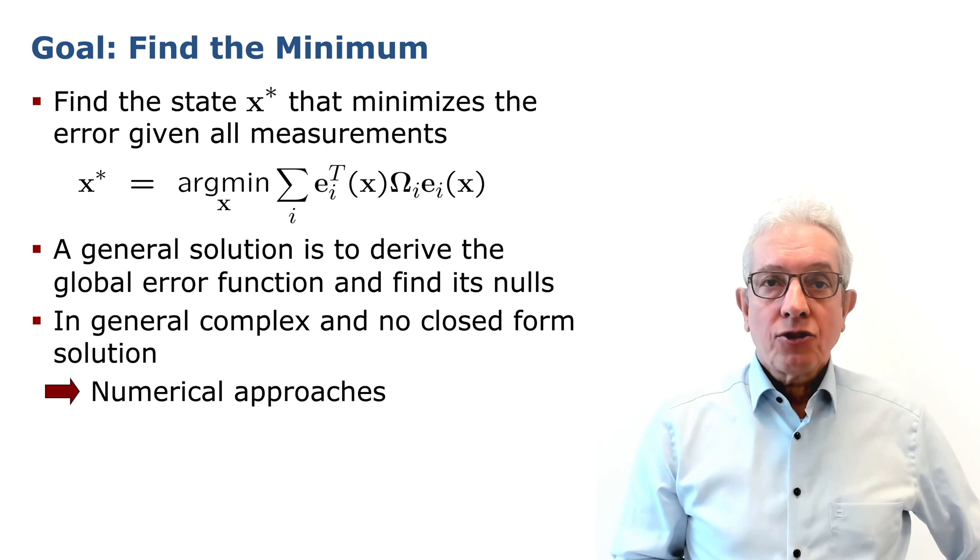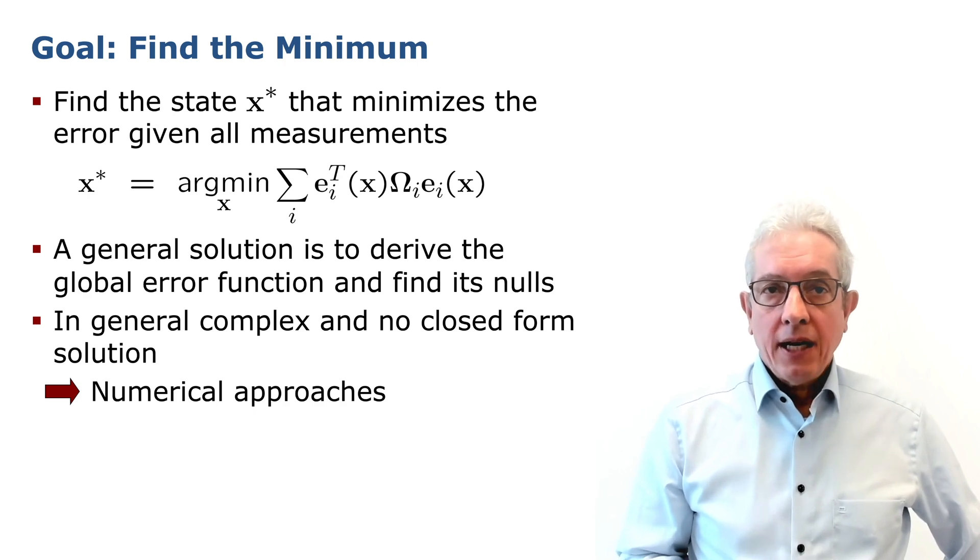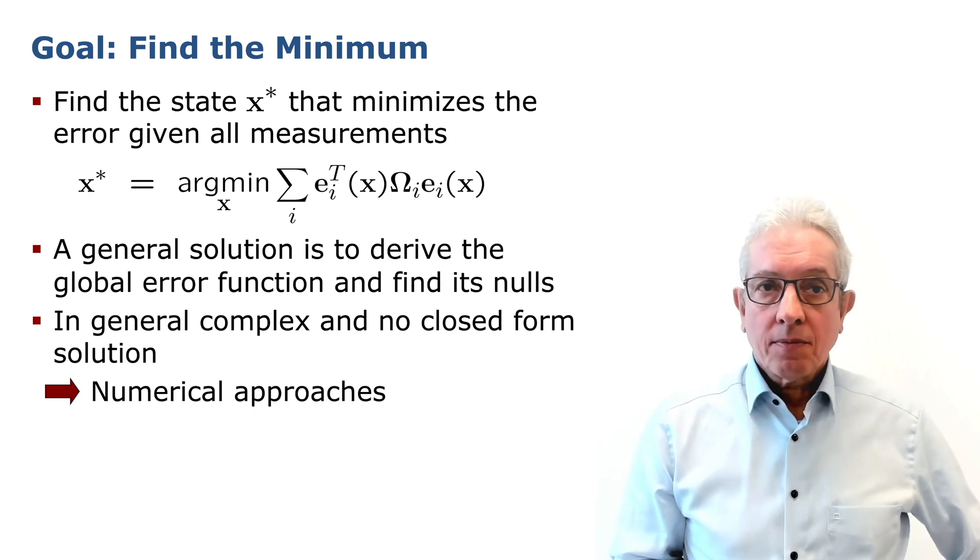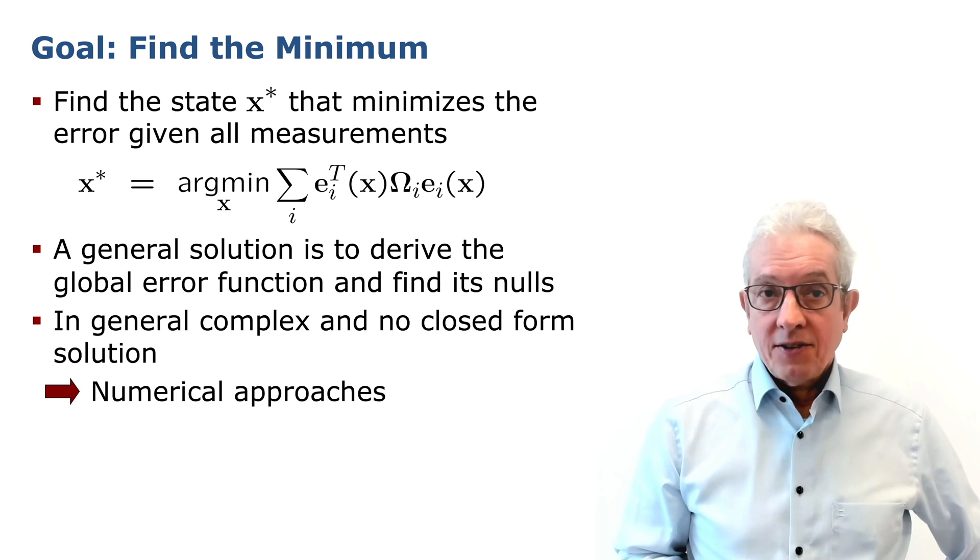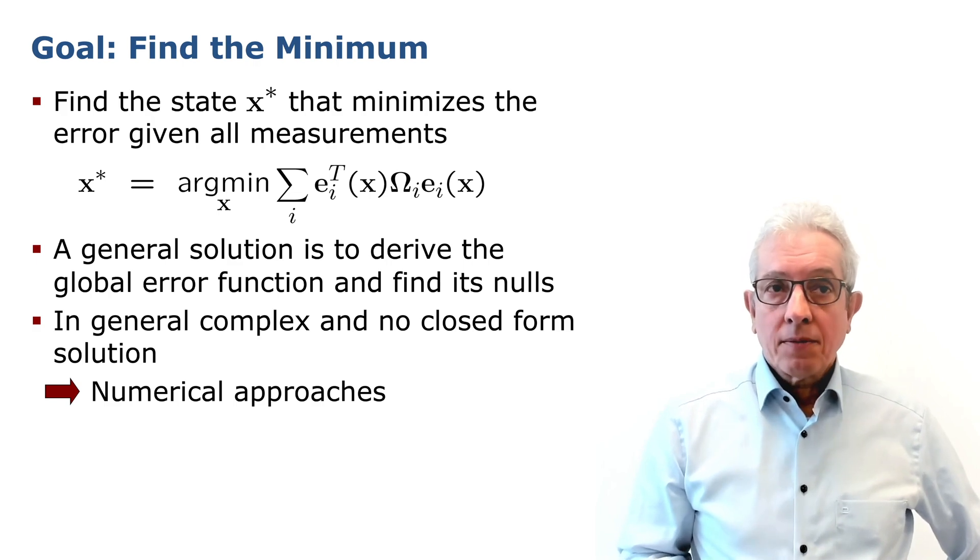The goal now is to find the state x star that minimizes the error given all the measurements. A typical solution to solve such an equation is to calculate the derivative of the error function and determine its zeros. Unfortunately, this is in general a complex problem for which no closed form solution exists, which means that we have to rely on numerical approaches to solve this equation.